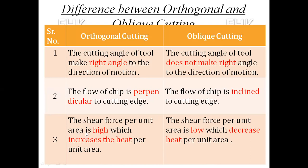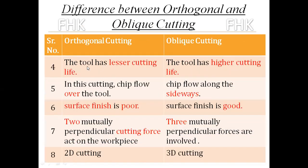Third point: The shear force per unit area is high in orthogonal cutting, as the cutting edge is directly perpendicular to the flow of chip. So shear force is high, cutting force is high, which increases the heat per unit area. In oblique cutting, the shear force per unit area is low as compared to orthogonal cutting, which decreases the heat per unit area. Fourth point: Due to the large heat produced in orthogonal cutting, the tool has lesser cutting life. Whereas in oblique cutting, the tool life is more.